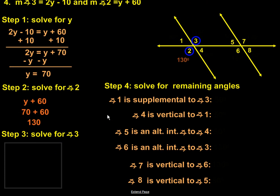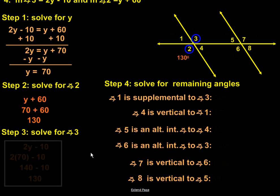Again, we know angle three should also be 130 degrees. If we do 2y minus 10, 2 times 70 minus 10, 140 minus 10, brings us to 130.